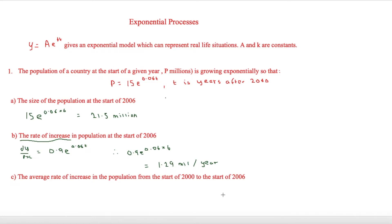The final question is asking for the average rate of increase in population from the start of 2000 to the start of 2006. This looks like a similar question, but in fact we don't need to do any differentiation here because it's just about looking between those dates. We've already got what the population was in 2006, and that's 21.5 million.